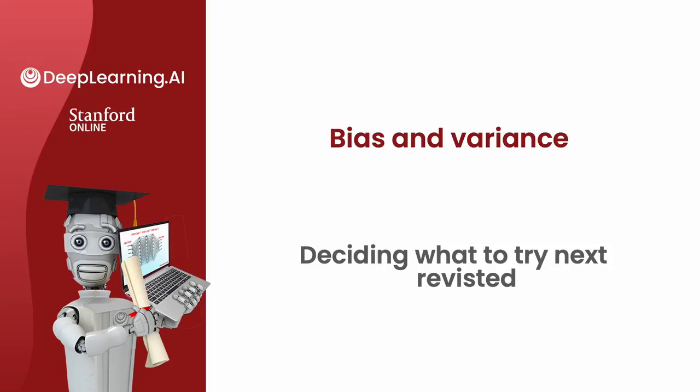You've seen how by looking at J-train and J-CV, that is the training error and the cross-validation error, or maybe even plotting a learning curve, you can try to get a sense of whether your learning algorithm has high bias or high variance.